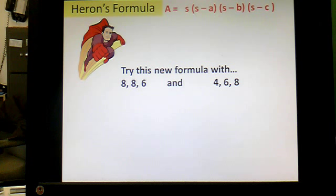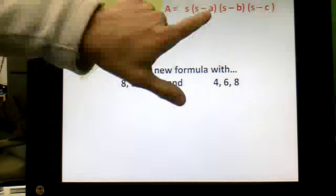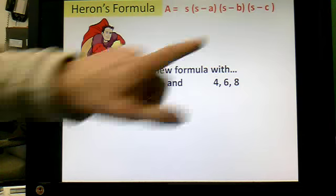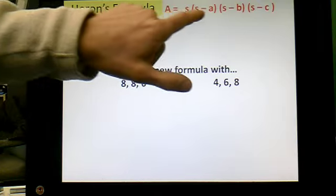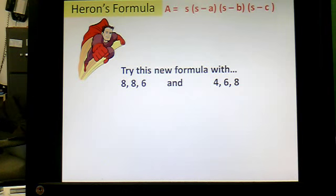Capital A obviously stands for area. You've got to find S, multiply S, times the quantity of S minus A, times the quantity of S minus B, times the quantity of S minus C. So, you're actually going to get four different numbers here. And you're going to multiply those four things out.